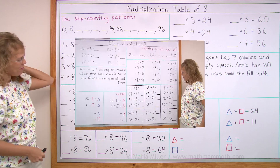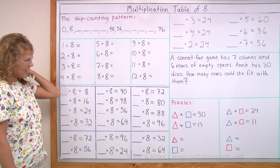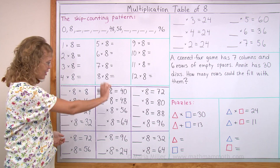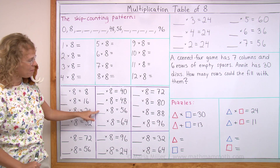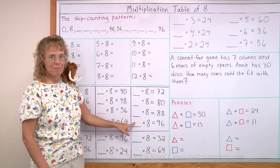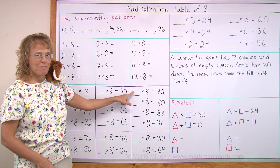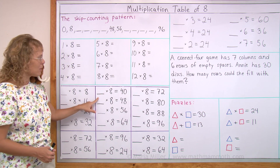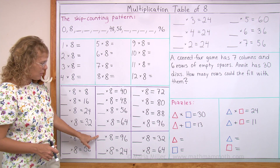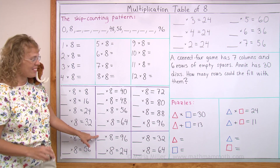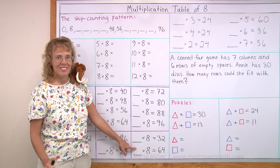Let's go on. Practicing the table backwards now. And you know how the answers go. So let's try: how many times 8 is 56? — 7. How many times 8 is 96? — 12. And this one? — 9. How many times 8 is 48? — 6. How many times 8 is 96? — 12. How many times 8 is 64? — 8. Continue answering.